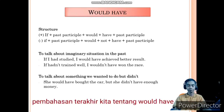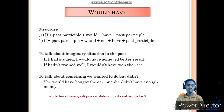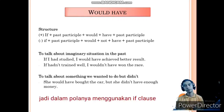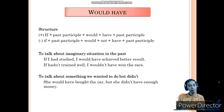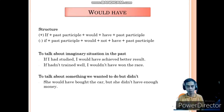Our last discussion for this session is about would have. We use would have usually in the form of the third conditional sentence with an if-clause. The structure for the positive sentence: if plus past perfect, plus would plus have plus past participle. And for the negative: if plus past perfect, plus would plus not plus have plus past participle.